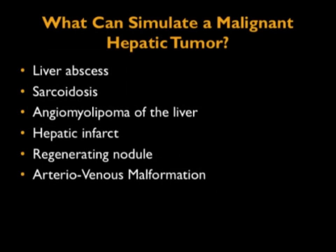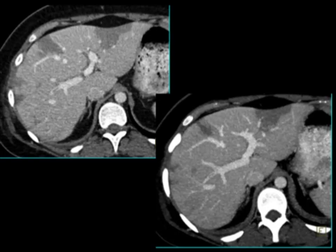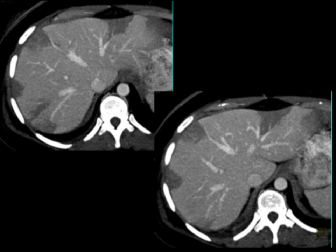Let's change topic. One of the things I always find challenging is lesions that can mimic pathology. Are there non-malignant entities that can simulate a malignant hepatic tumor? The answer is yes: liver abscess, sarcoidosis with multiple nodules, angiomyolipoma of the liver, theoretically infarcts, regenerating nodules, and AV malformations. Looking at infarcts — the liver has two blood supplies, but here's a great example of hepatic infarcts. Most commonly we see them post liver transplant surgery, but you can see infarcts from a number of causes, particularly in patients who are showering emboli. Beautiful example of different wedge-shaped defects, best seen in venous phase imaging, solitary or multiple.